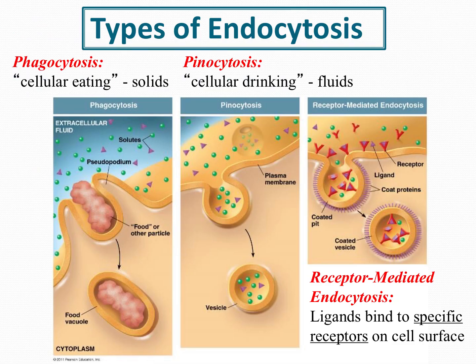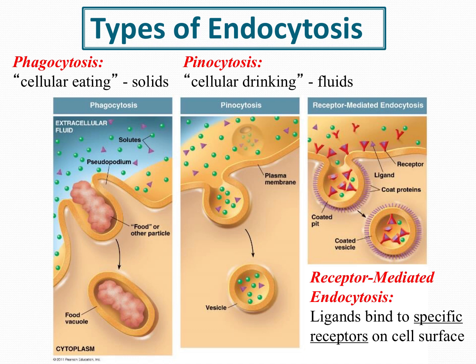More specifically: phagocytosis is cellular eating — moving solids. Pinocytosis is cell drinking — moving fluids. The process is similar: the solid or fluid pushes down into the membrane like sitting on a trampoline and pops off a vesicle. Receptor-mediated endocytosis is exactly what it sounds like — it has ligands or receptors on the surface that signal the cell that something is coming. It's almost like a special delivery, a package you have to sign for, that gives a signal to the cell that a very special package is on its way.